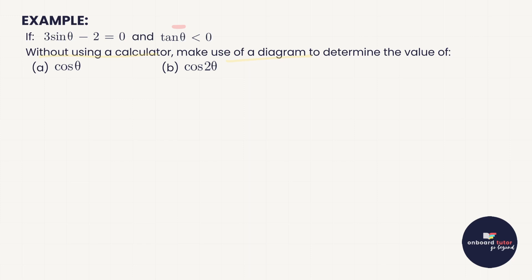If 3 sin θ minus 2 equals zero and tan θ is less than zero (meaning tan θ is negative), then without using a calculator, make use of a diagram to determine cos θ and cos 2θ. Let's take that trig ratio and isolate it: 3 sin θ equals 2, so sin θ equals 2/3. I want this because sin is opposite over hypotenuse, or more relevant to Pythagoras questions, y over r.